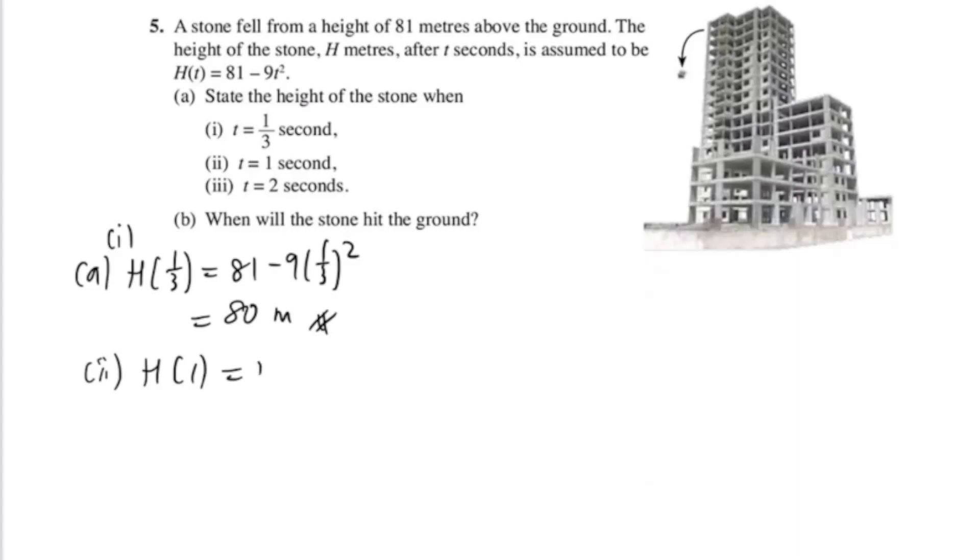Second one, when your t is 1, so you get 81 - 9(1)², 1 squared is 1, 81 - 9 is 72 meters. Third one, you put 2 inside: 81 - 9(2)². 2 squared is 4, 9 times 4 is 36. 81 - 36 is 45 meters.